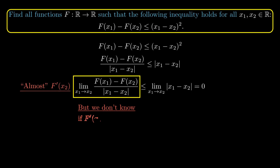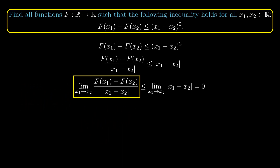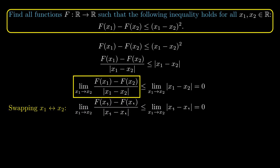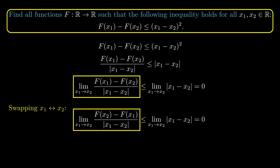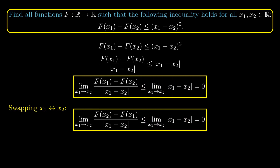We don't yet know whether f'(x_2) exists. However, we can do the same thing by swapping x_1 and x_2 — since they are dummy variables — to get |f(x_2) - f(x_1)| / |x_2 - x_1|. Since absolute values are non-negative, we can swap x_2 with x_1 in the absolute value. What we arrive at is the negative of the previous expression, and both expressions are less than or equal to zero.